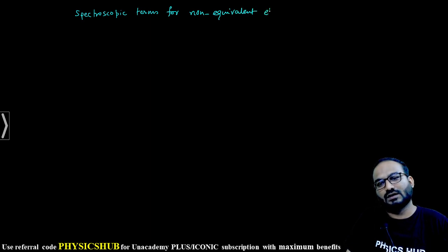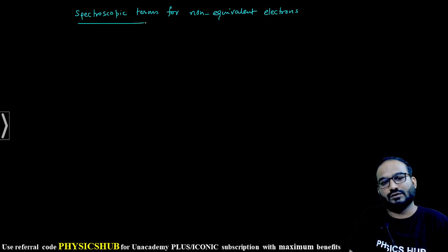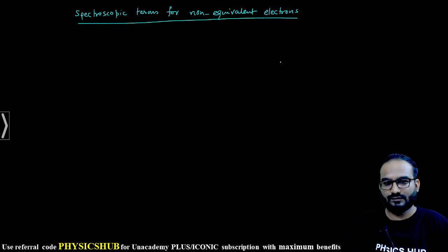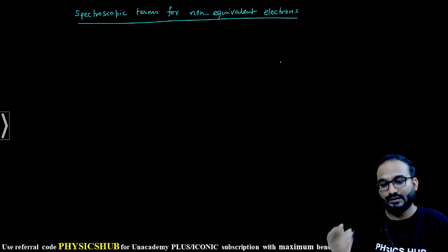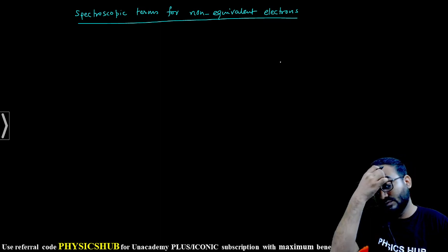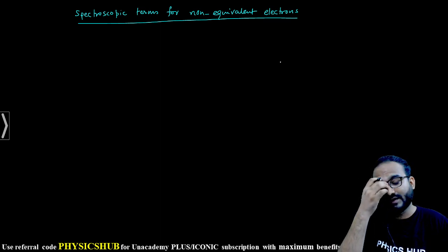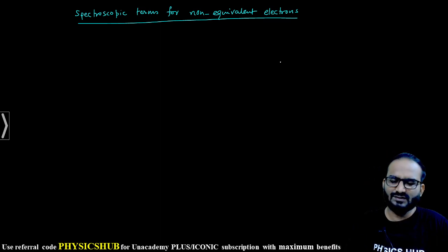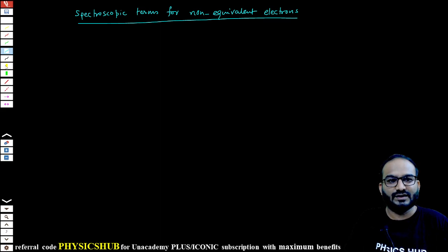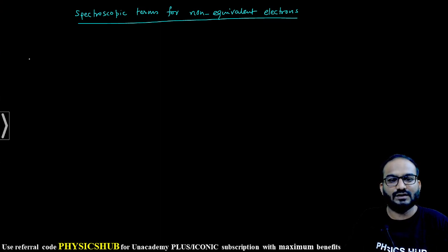What are non-equivalent electrons and what are equivalent electrons? Equivalent electrons are from the same subshell whose l-values are the same. If l-values are different, then those will be non-equivalent electrons.